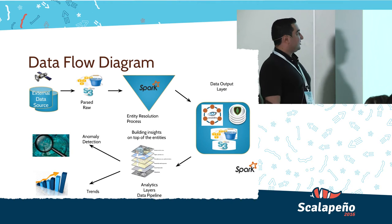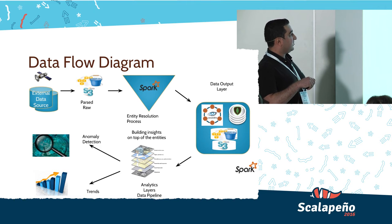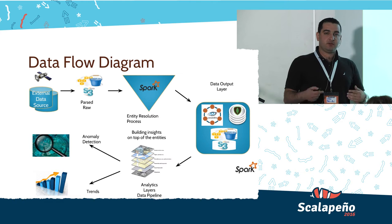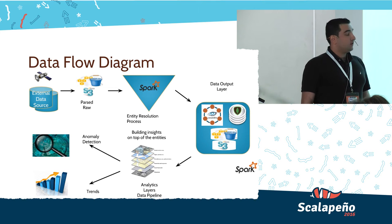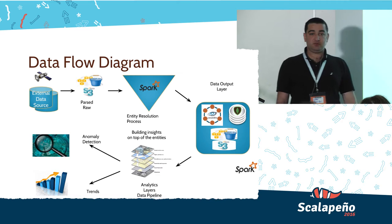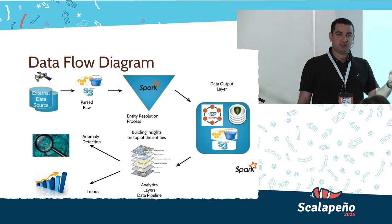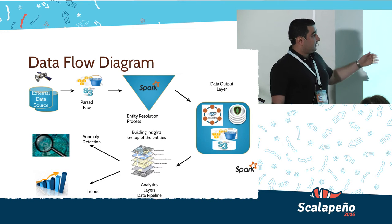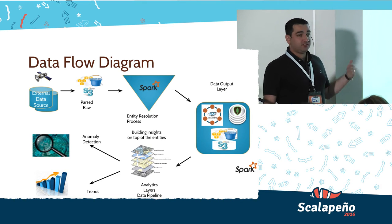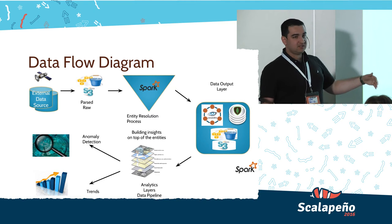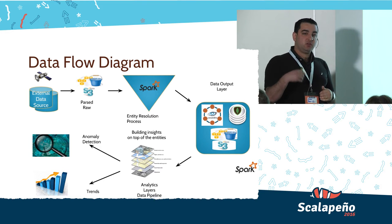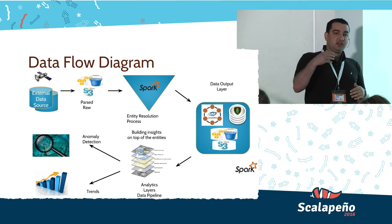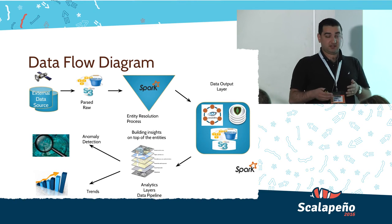The visual data flow diagram: satellites report data along with external data sources that we combine with it, everything is parsed, and the raw data is served on S3 — because it's much cheaper than HDFS, as I'll show in future slides. Then we have our Spark analytics layers — the entity resolution process going over all the data. It's kind of a funnel: when I read the raw data, I filter a lot, transform, and add more logical layers. Each layer I go forward with actually downscales the data.